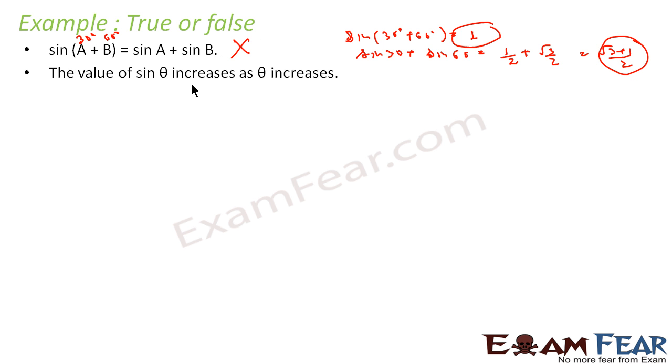The value of sin θ increases as θ increases? No, because we know that sin follows a curve like this. Sin 0° is 0, 1/2, 1/√2, √3/2, and then 1 at the max. Again it goes down. So maximum value of sin is 1. It goes down again and the minimum is -1. So sin is -1 to 1. So it is not that sin value always increases. It increases and decreases. Again it decreases and increases. So it follows a curve like this.